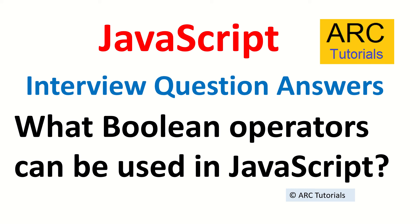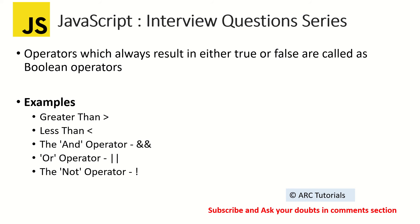The answer is: the operators which always result in either true or false are called Boolean operators. You have used them all before — greater than, less than, AND operator, OR operator, NOT operator. All of these will result in true or false.